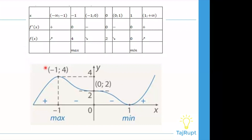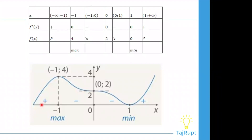Благодаря всем этим данным мы можем начертить сам график. Вводим все данные: сначала критическая точка максимума — (−1; 4). Точка (0; 2) — это точка минимума. И точка (1; 0) также будет являться точкой минимума. Соединим эти точки благодаря признакам возрастания и убывания: от минуса бесконечности до минус единицы функция возрастает, от минус единицы до нуля убывает, от нуля до единицы опять убывает, и от единицы до плюса бесконечности функция возрастает. Благодаря вычислению производной, приравниванию к нулю, а также нахождению знаков постоянства мы можем исследовать функцию и начертить её график.